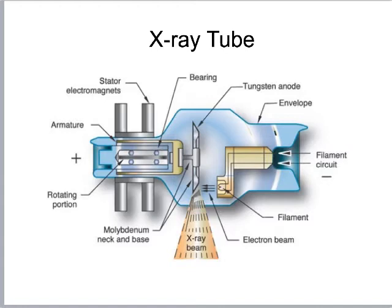In terms of engineering, the envelope is also why we need the stator. The stator uses magnetic pulses to turn the anode without physically touching it — it's outside the vacuum and pulses through the envelope, causing the anode to rotate. This is an example of a magnetic motor.